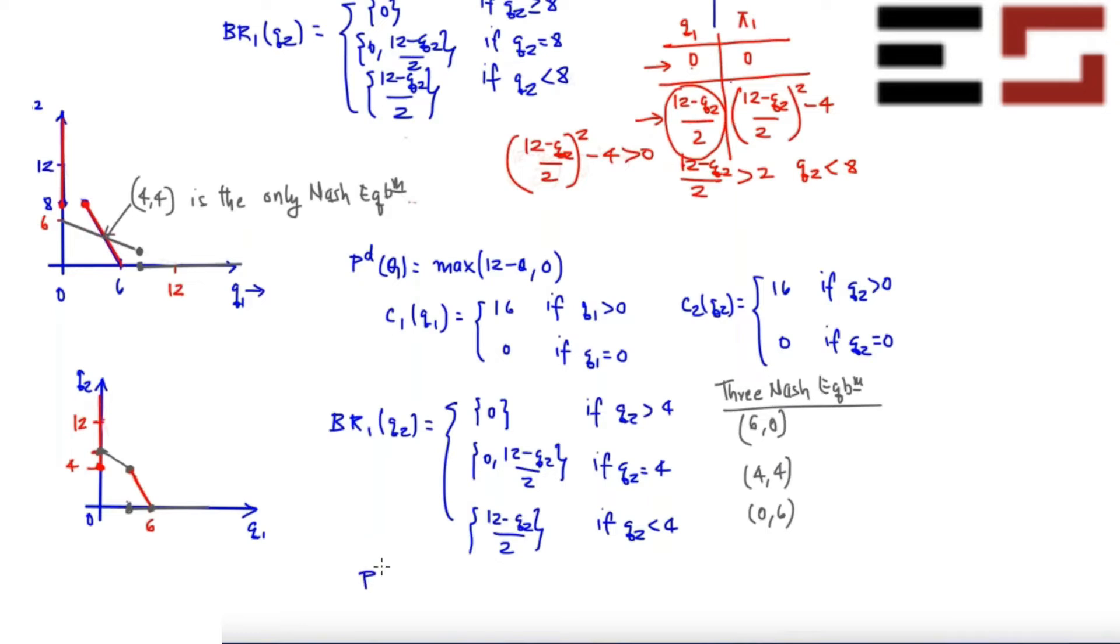And if you redo this problem for even higher fixed cost, let's say C1(Q1) is 25 if Q1 is positive, 0 if Q1 is 0, and C2(Q2) is 25 if Q2 is positive and 0 if Q2 is 0, you will find that there are only two Nash equilibrium, one is (6,0) and (0,6). So this (4,4) will vanish.